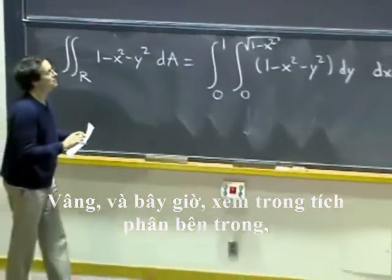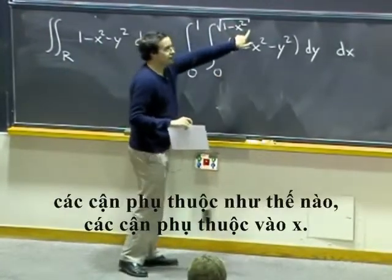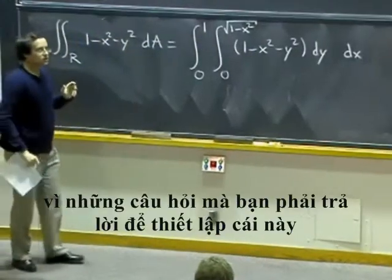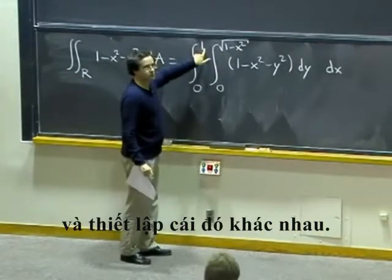So, x goes from zero to one. OK, and now see how, in the inner integral, the bounds depend on x. In the outer one, you just get numbers because the questions that you have to ask to set up this one and set up that one are different.